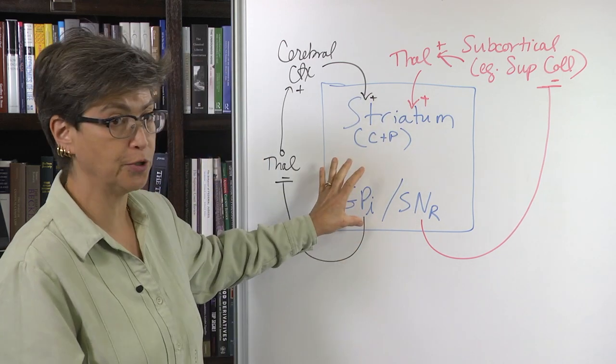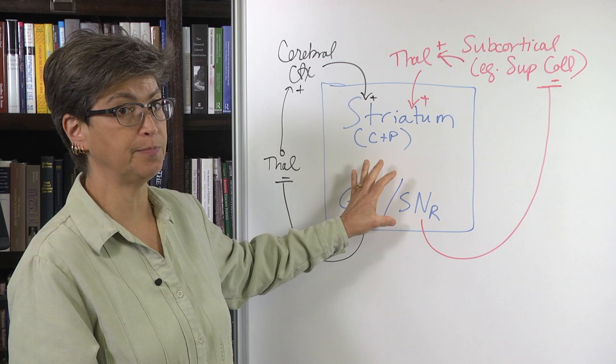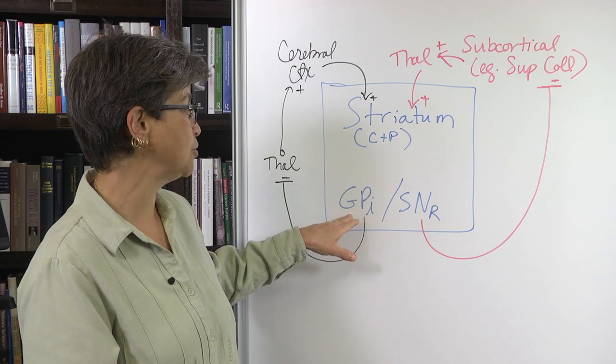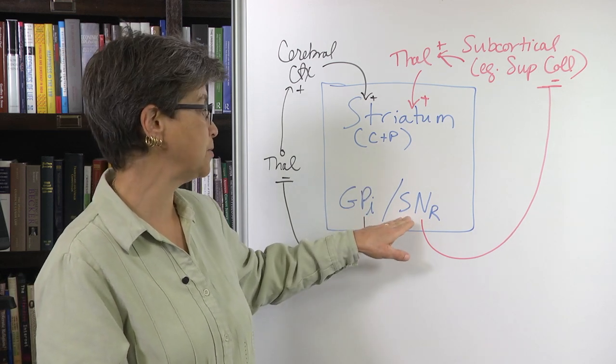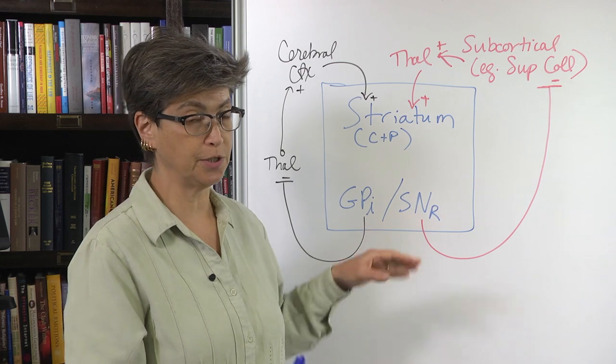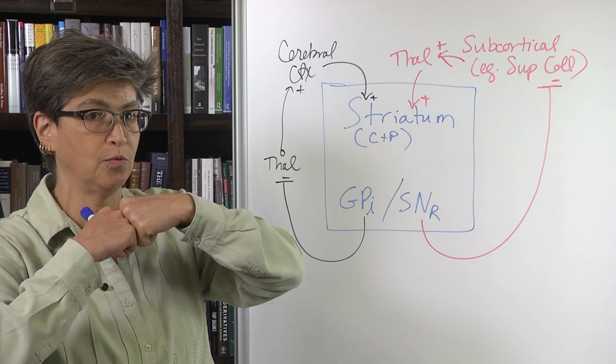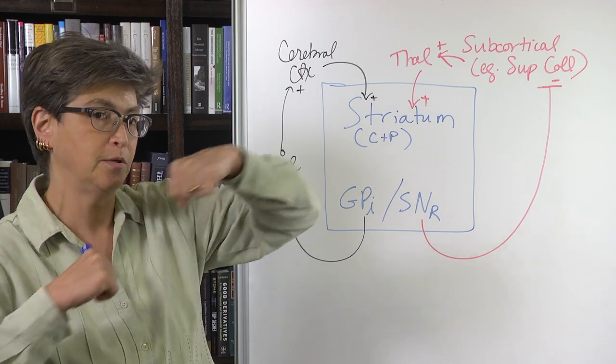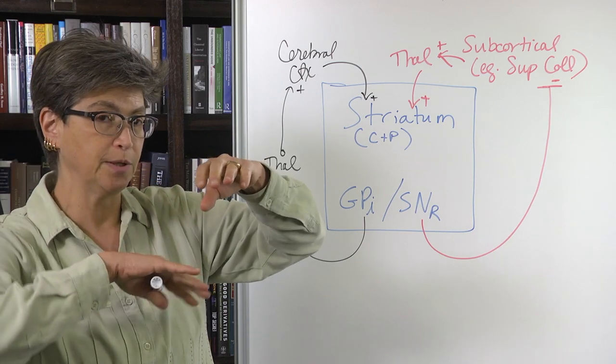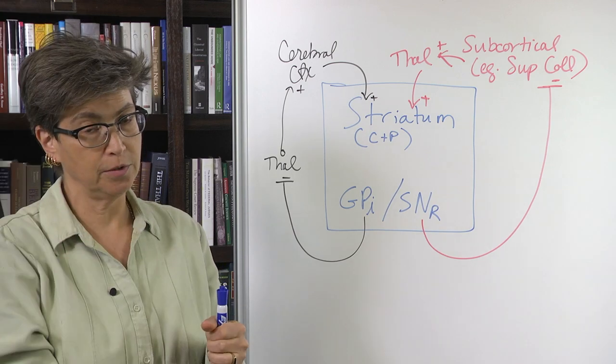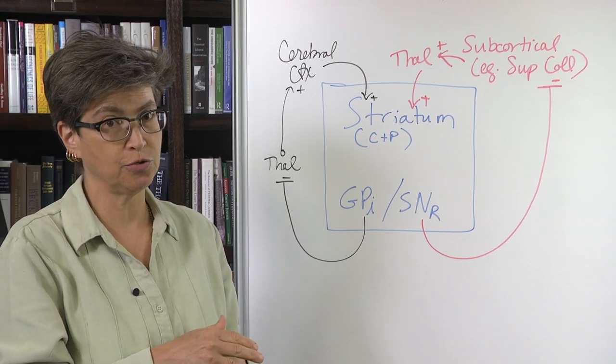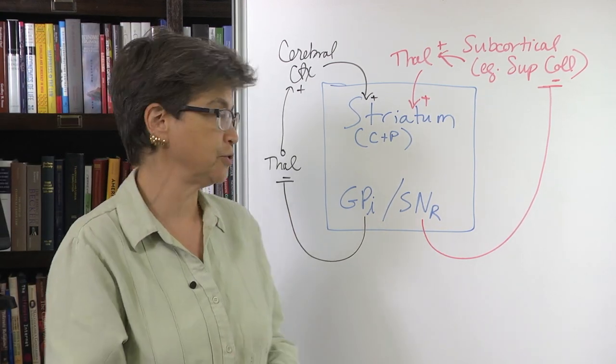The major output from the basal ganglia comes from the internal globus pallidus and the substantia nigra pars reticulata. These are just across the cerebral peduncle from each other. They were at one point together, and then throughout development, the cerebral peduncle, the continuation of the internal capsule, developed and split those two regions.